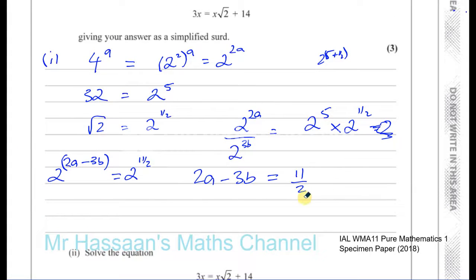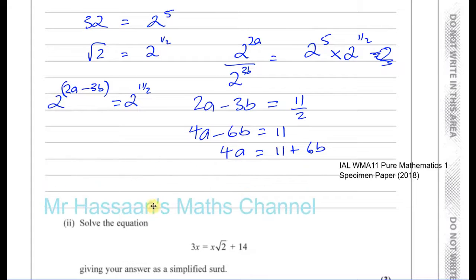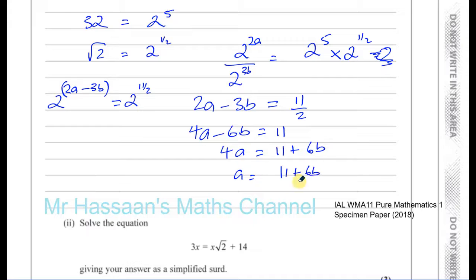So what I'm going to do here is, to make my life a bit easier, I will just get rid of the fraction. So I'll multiply both sides by 2 first. So I have 4a minus 6b equals 11. And then I will add 6b to both sides. So 4a equals 11 plus 6b. Then I can divide both sides by 4. So I can say a is going to be 11 plus 6b over 4.